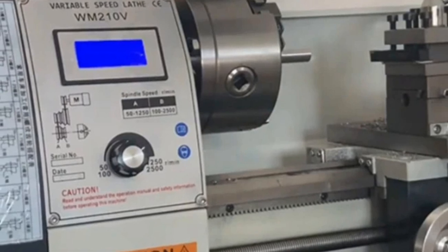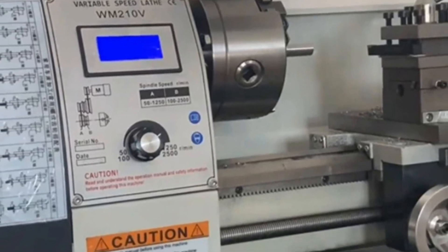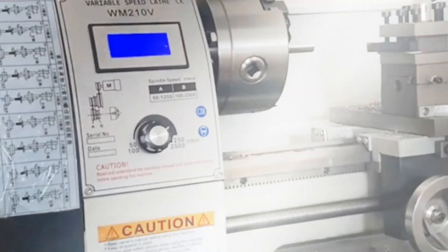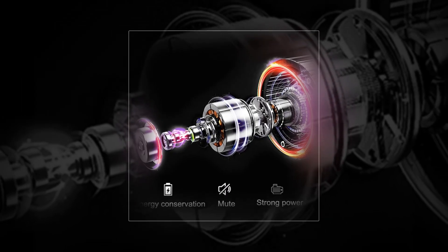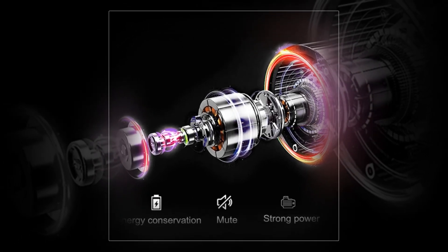With a chuck scale optional, it provides precise control over machining operations. Its 15 and 3 quarters swing over bed and 125mm chuck make it suitable for a wide range of metalworking and drilling tasks.